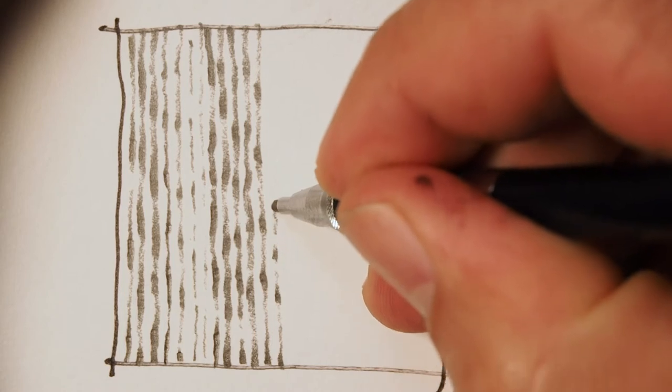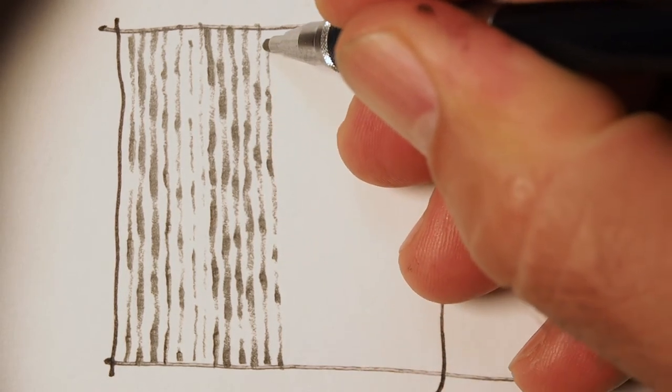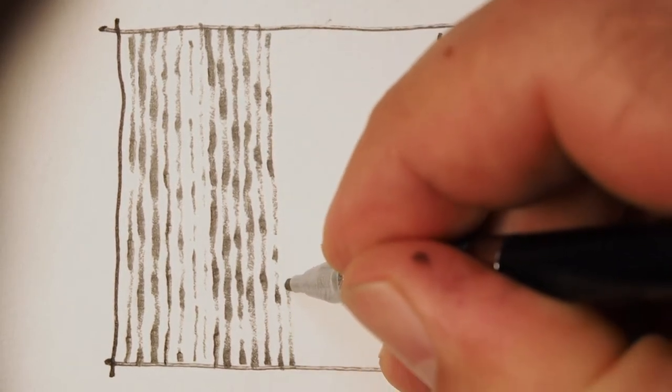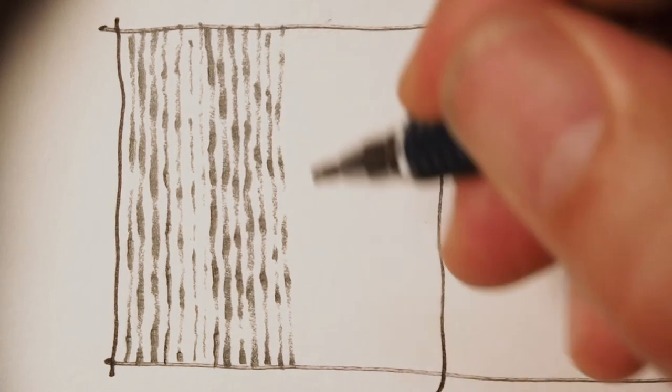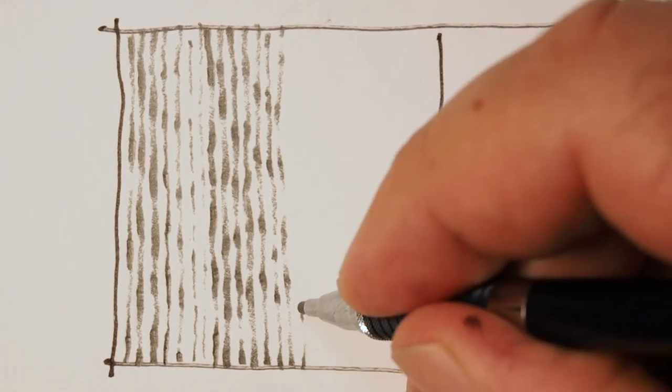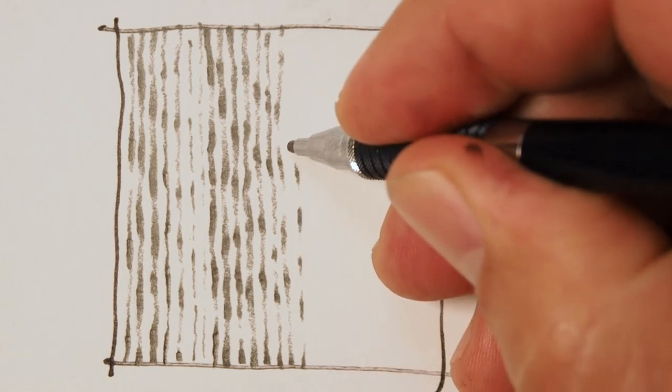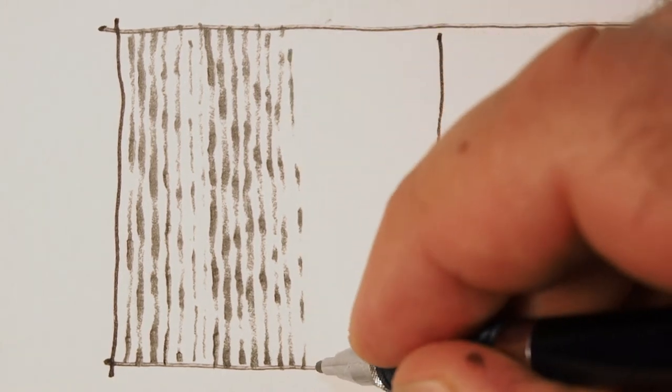You'll also notice that I make marks by pushing the pencil, pulling the pencil, dragging the pencil, or whatever tool I have. You should also experiment with making lines going in different directions and still having them go where you want them and be under control.